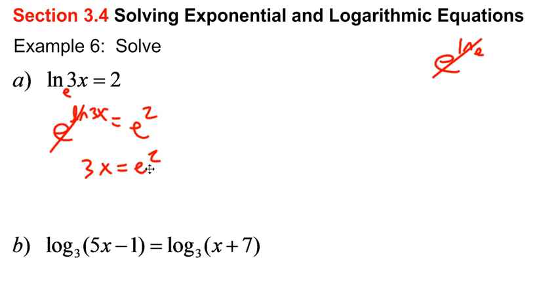Cool beans. That's pretty sweet. So now the LN is gone. I have 3X, and now we can divide by 3 or multiply by one-third. So one-third times E squared.